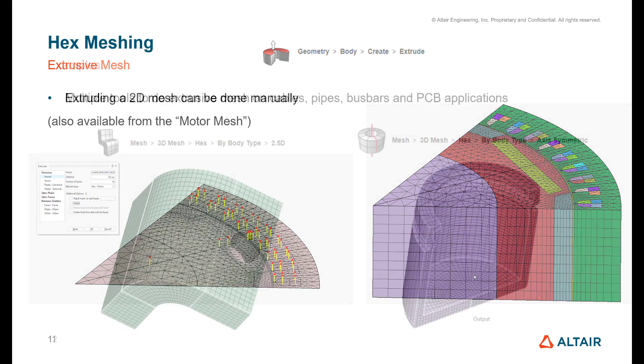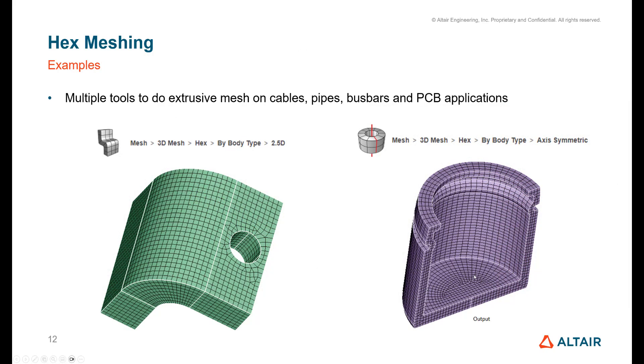But apart from this manual method there's a lot of very specific tools. You can see here there are tools to follow two and a half D bodies, so anything which is like an extruded CAD with some additional features, it can mesh it nicely with hex elements to make it regular and very nice. You can also do axisymmetric parts, so anything like induction heating, this can help you reproduce your mesh around this extrusion nicely.